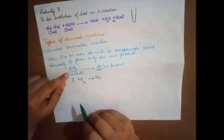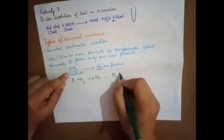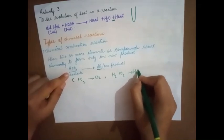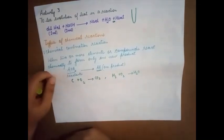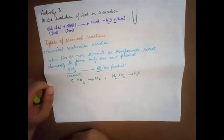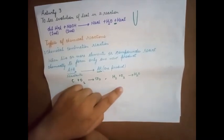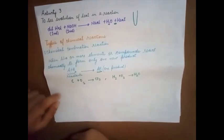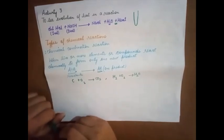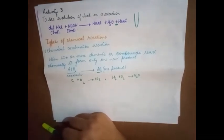Another example: H₂ plus O₂ gives rise to H₂O. Again, only one product is formed. In a combination reaction, two or more reactants combine to give rise to a single product. This reaction may occur between elements or compounds.